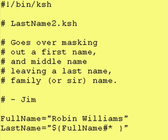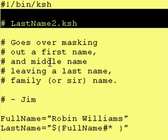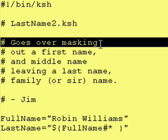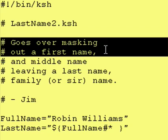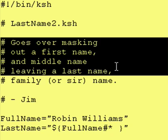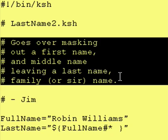Hey everybody, it's Jim, and welcome back to another lesson of Introduction to Corn Shell. Today we're working with a program called LastName2.ksh, and it goes over masking out a first name, a middle name, leaving us with a last name, family name, or surname, whichever you prefer to call it.